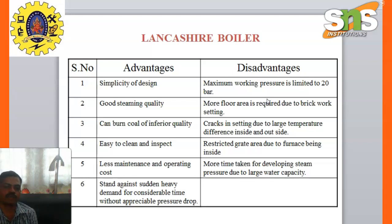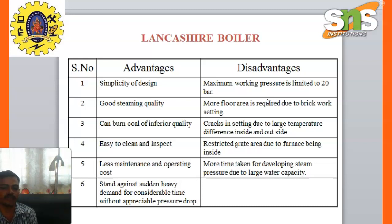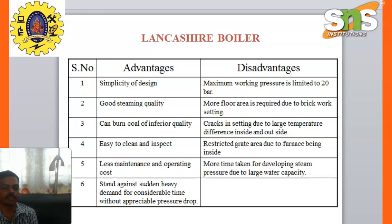The disadvantages of Lancashire boiler: maximum working pressure is limited to 20 bar, more floor area is required due to brick setting, cracks in the setting due to large temperature difference inside and outside, restricted grate area due to furnace being inside, and more time taken for developing steam pressure due to large water capacity.